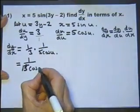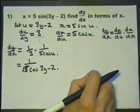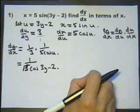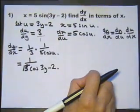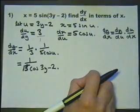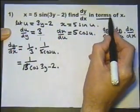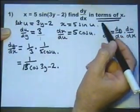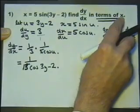We've got 1 over 15 cosine of u. We can substitute this information back for u, so we can have 15 cosine of u is 15 cosine of 3y minus 2. Now the temptation is to say I've finished and move on to the next question. But I haven't finished yet — I have got dy/dx as required, but I haven't got it in terms of x, so I haven't finished.